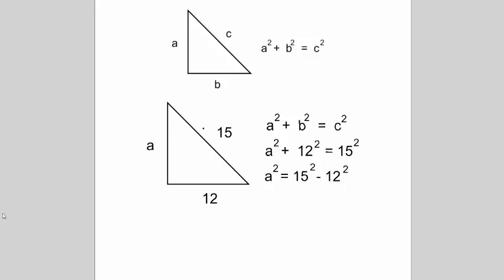We've got a squared on its own equals 15 squared minus 12 squared. We can put that in our calculator, or you could do some mental arithmetic. 15 squared is 225, 12 squared is 144. a squared equals 225 minus 144. So a squared equals 81.